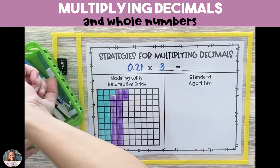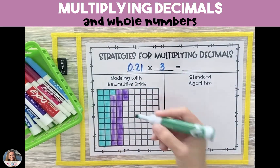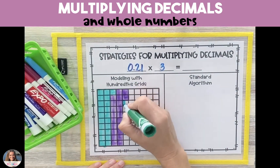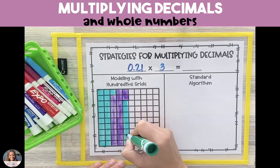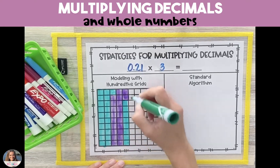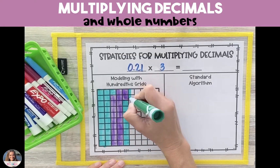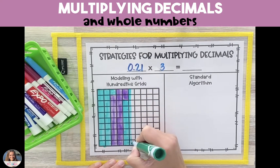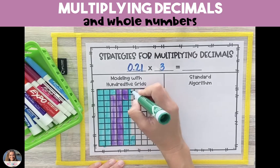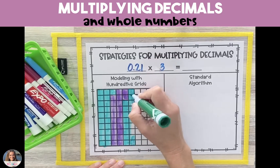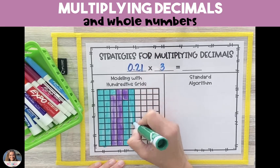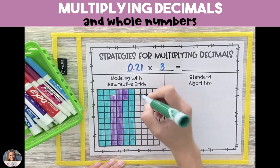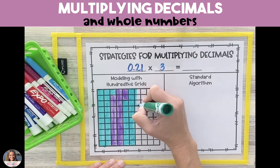Because we have 21 hundredths three times, we're going to show this in the model three different times. We're going to alternate colors so that we can clearly see each group of 21 hundredths.